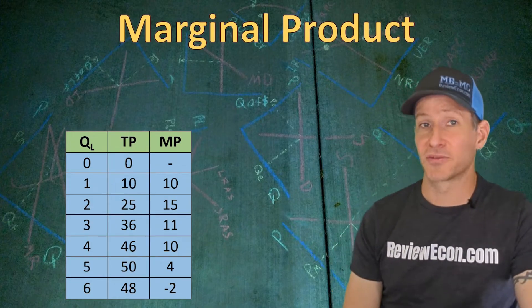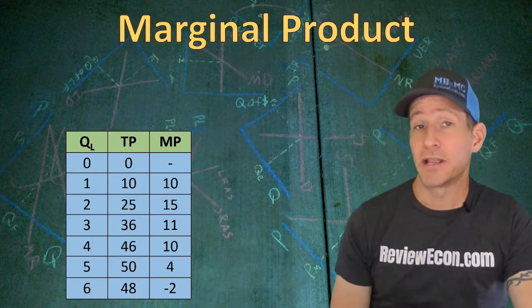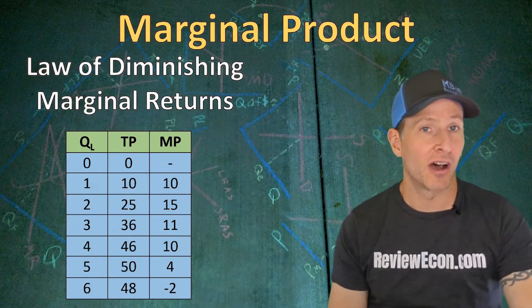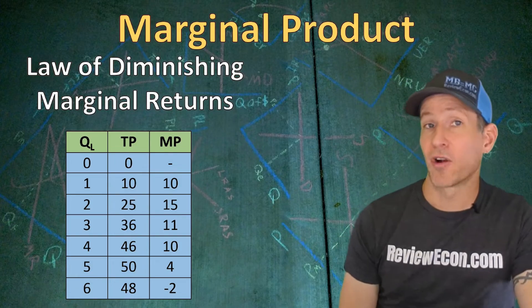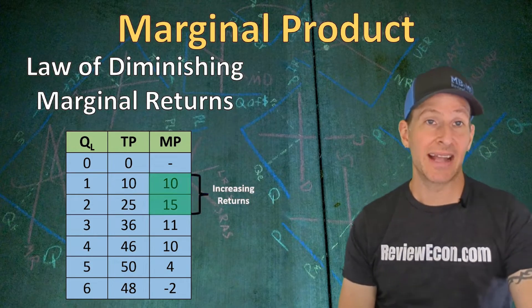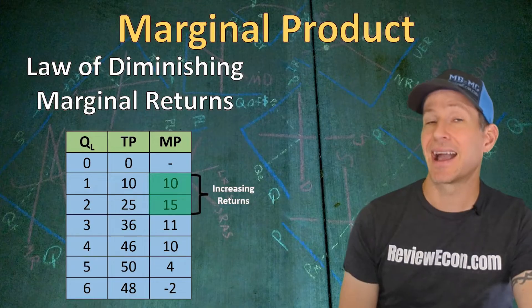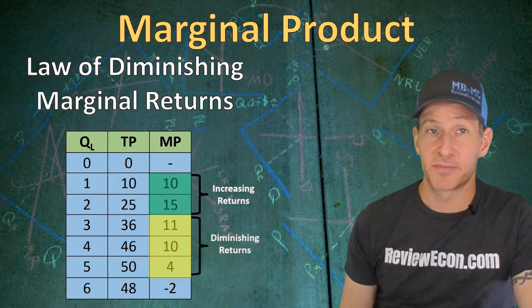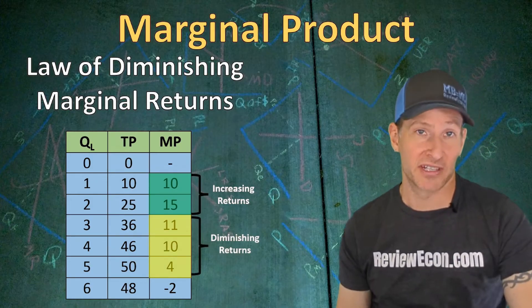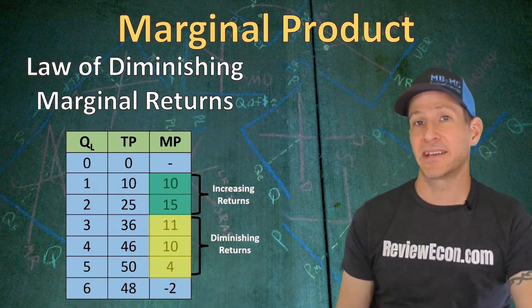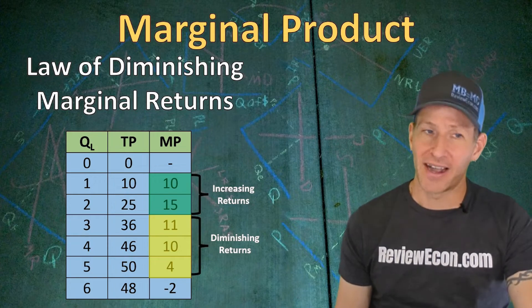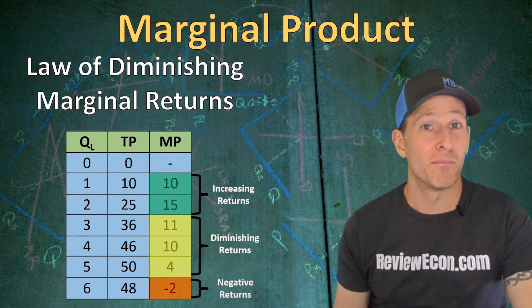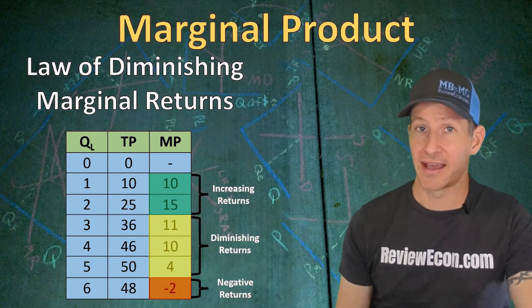Now that we have a marginal product column, we can more easily see the three phases predicted by the law of diminishing marginal returns. When marginal product is increasing, total product is increasing at an increasing rate — that's increasing returns. Then marginal product begins to decrease but is still positive, meaning total product is increasing at a decreasing rate. Finally, total product decreases and marginal product is negative — we call that negative returns.